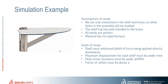Now I'm going to show you an example. The assumptions for this shelf unit are: we are only interested in the shelf and the brace - no other items in the assembly will be studied; the shelf top has been bonded to the brace; all welds are perfect; and the material has no imperfections. The goals: the shelf must withstand 500 newtons of force applied directly downwards onto this face; maximum displacement must be under 1mm; peak stress must be under 30 MPa; and the factor of safety must be above 4.